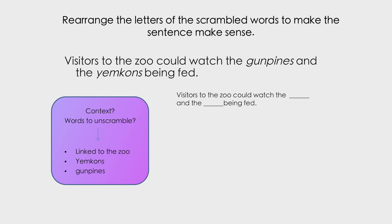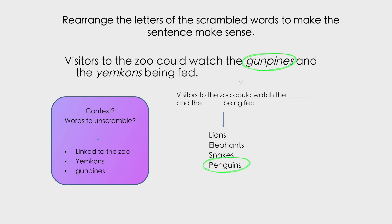So what animals would there be in the zoo? Lions, elephants, snakes — penguins! There's a word that could work. Let's look at 'gun pines.' Yes — we realise that 'gun pines' is the anagram for penguins. So that's one answer. Now let's continue our search.